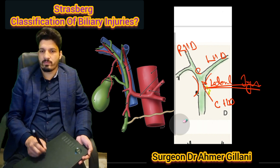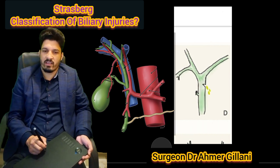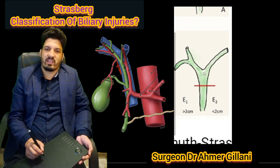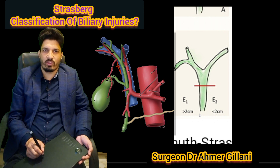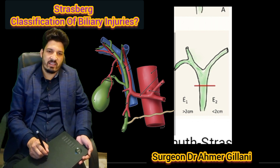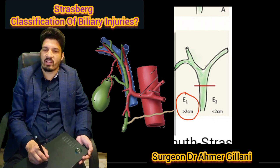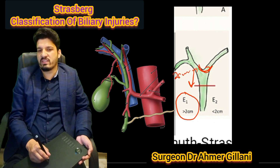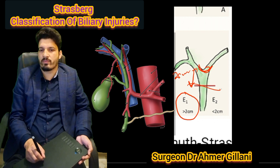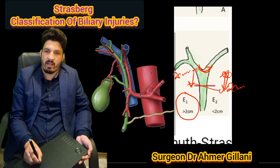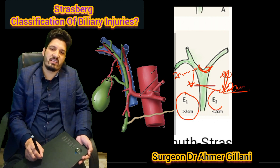Finally, we have Type E. E is divided into E1, E2, E3, E4, and E5. E1 is the injury which is more than 2 cm from the confluence. This is the confluence, and this distance is more than 2 cm. If this distance is less than 2 cm, then this will be called an E2 injury.